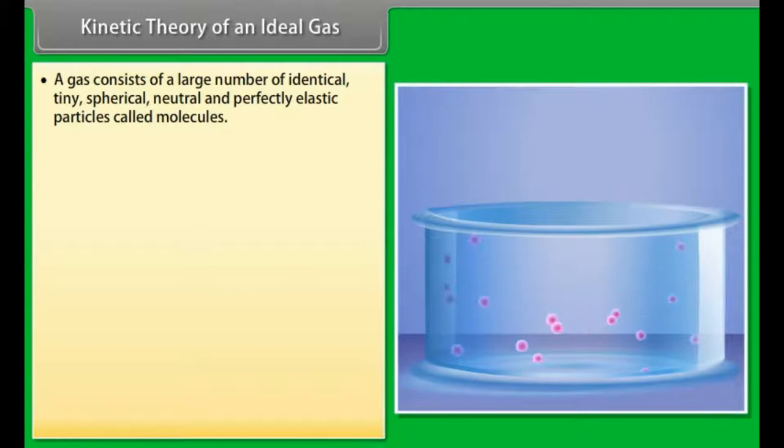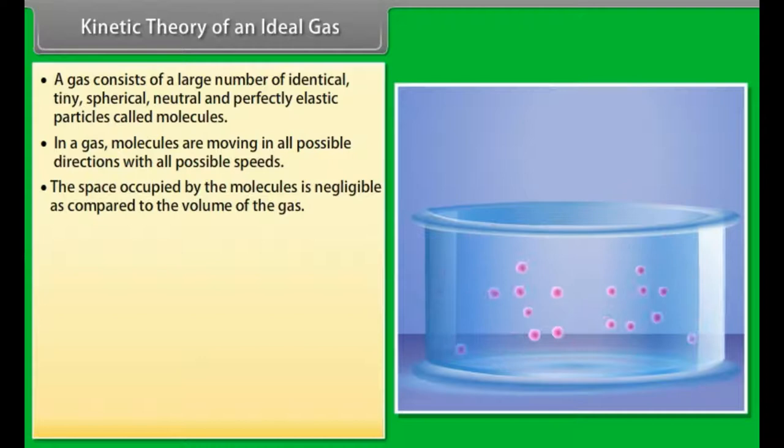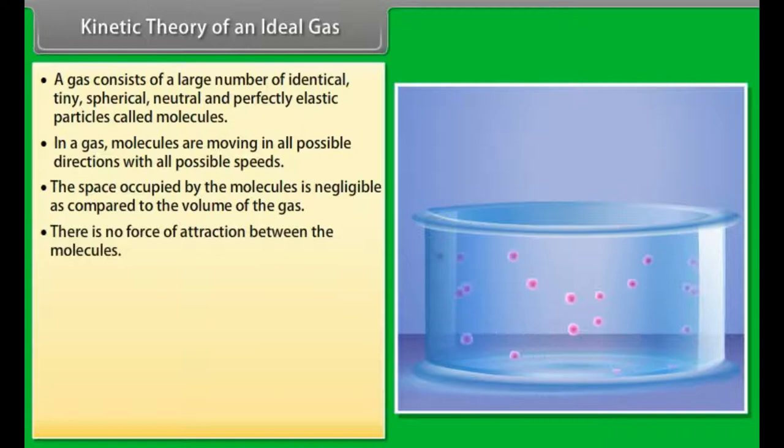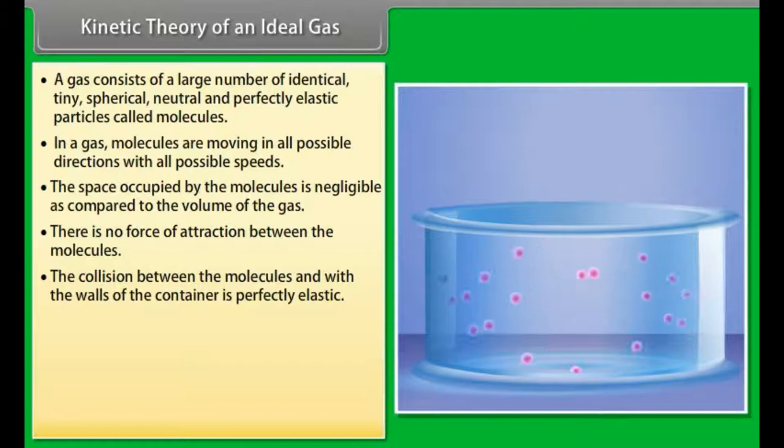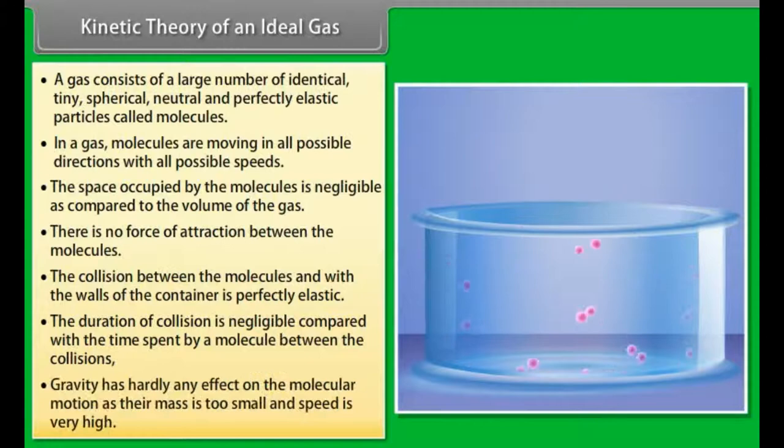A gas consists of a large number of identical, tiny, spherical, neutral and perfectly elastic particles called molecules. In a gas, molecules are moving in all possible directions with all possible speeds. The space occupied by the molecules is negligible as compared to the volume of the gas. There is no force of attraction between the molecules. The collision between the molecules and with the walls of the container is perfectly elastic. The duration of collision is negligible compared with the time spent by a molecule between the collisions. Gravity has hardly any effect on the molecular motion as their mass is too small and speed is very high.